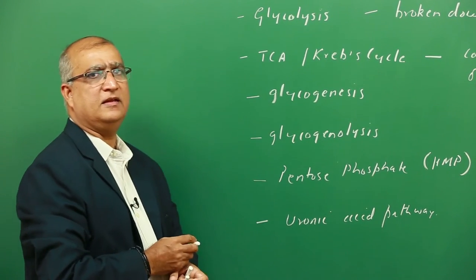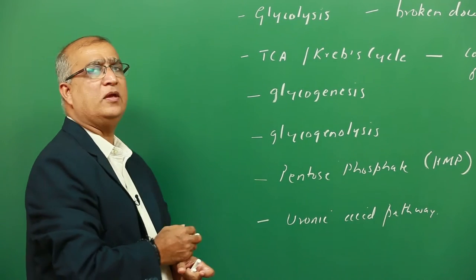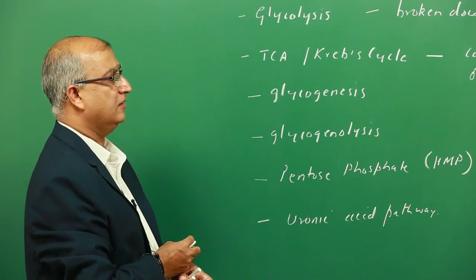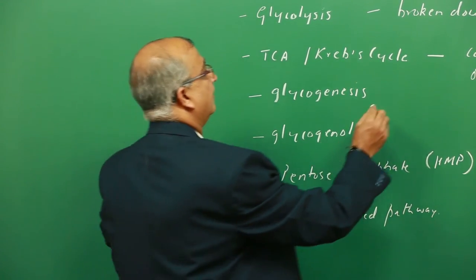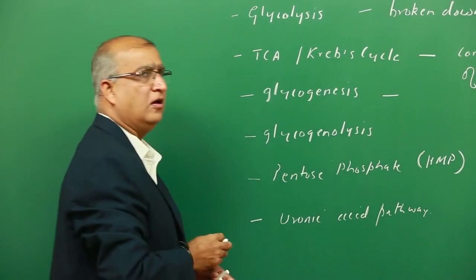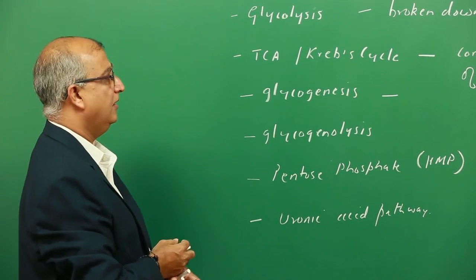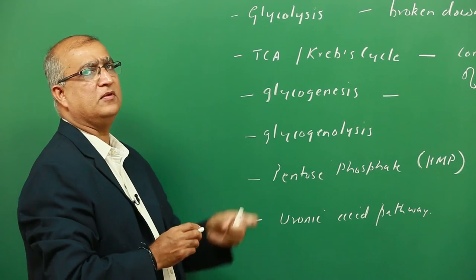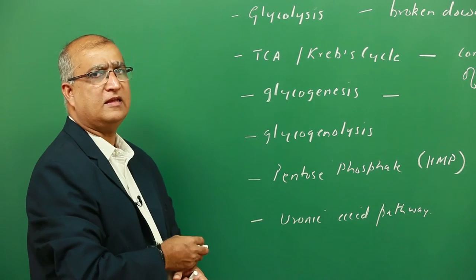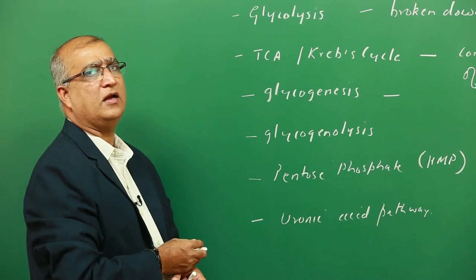Glycogenesis, as the name suggests, is a pathway for formation of glycogen. So in a sense it is an anabolic or a building pathway, and this usually comes into play when there is excess glucose than what is required by the system at that instant.